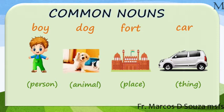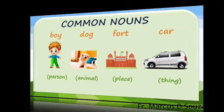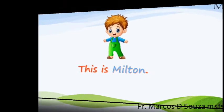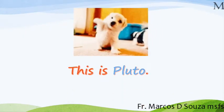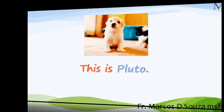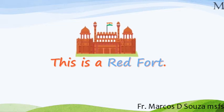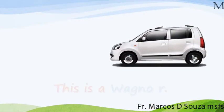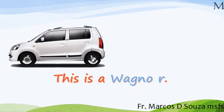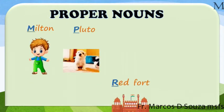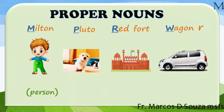Now let us give special names to these common nouns. So we can say: This is Milton. This is Pluto. This is the Red Fort. This is a Vagana. Special names given to a person, animal, place and thing are called proper nouns.